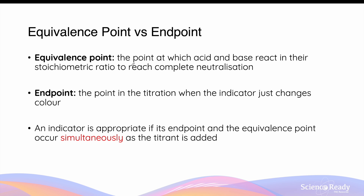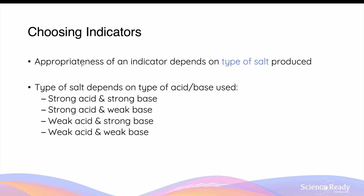There will be another term you will hear about in titration, and that is end point. While equivalence point is related to the stoichiometric ratio that's required to reach complete neutralization, the word endpoint refers to when the indicator changes colour. When we are choosing the indicator, we want to pick an indicator so that its end point is close to the equivalence point, so that its end point and the equivalence point of the titration occur simultaneously. When the indicator changes colour, the equivalence point of the titration is reached at the same time.